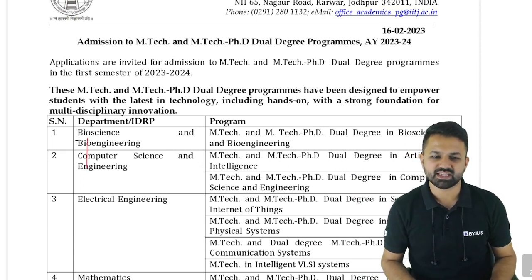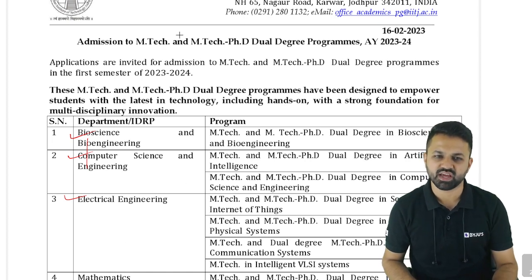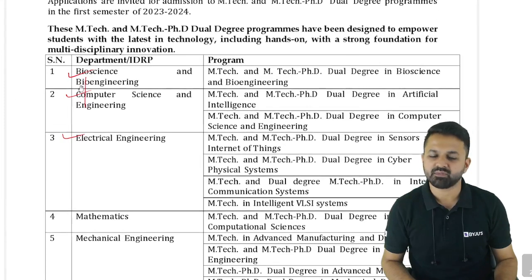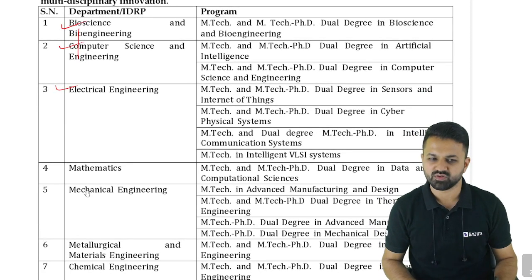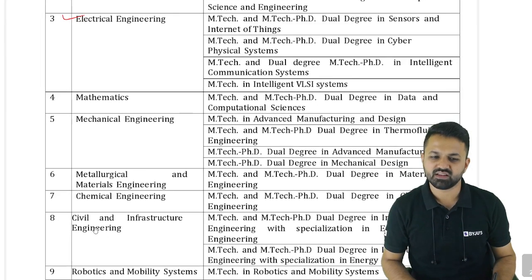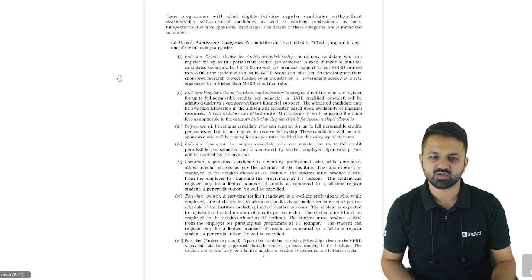There are departments like Bioscience, Computer Science, Electrical Engineering — in these branches you can apply for M-TECH and M-TECH plus PhD as well. Also Mechanical Engineering, Mathematics, Metallurgy, Chemical, Civil, and Robotics — so these are all the branches available.